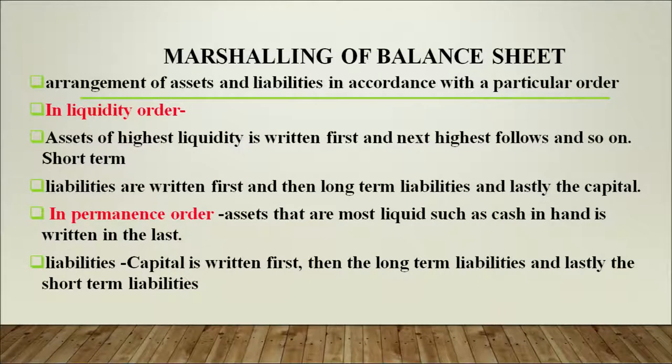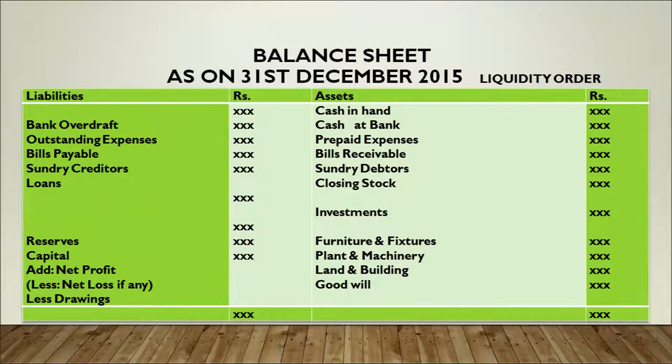We will now start entering all the assets and all our liabilities onto a balance sheet in some particular order. There are two orders which can be used. The first is the liquidity order. The liquidity order states that assets of the highest liquidity have to be written first — and the highest liquidity assets are your current assets. So the first item here would be cash in hand, followed by cash in bank, then prepaid expenses, bills receivable, sundry debtors, closing stocks, short term investments, furniture and fixtures, plant and machinery, land and building, and goodwill.